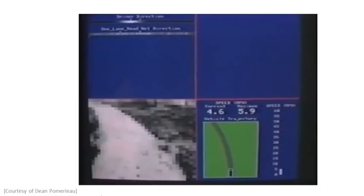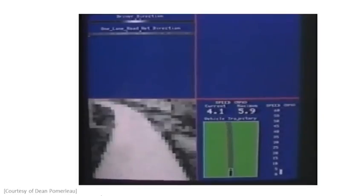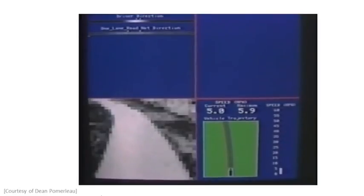This training image is reduced in resolution to 30 by 32 pixels and provided as input to Alvin's three-layered network. Using the backpropagation learning algorithm, Alvin is trained to output the same steering direction as the human driver for that image.